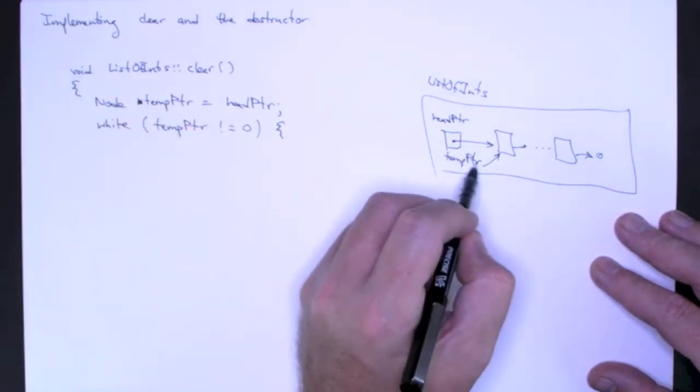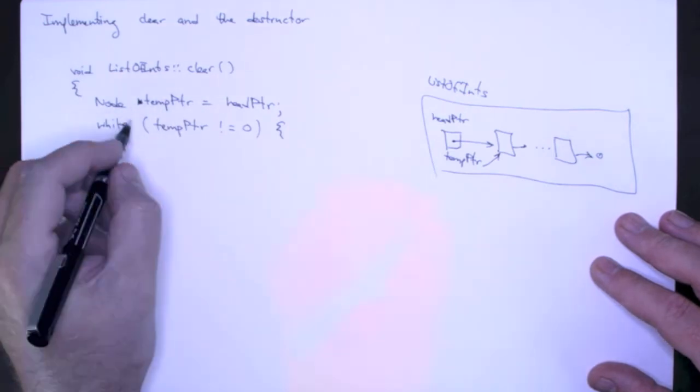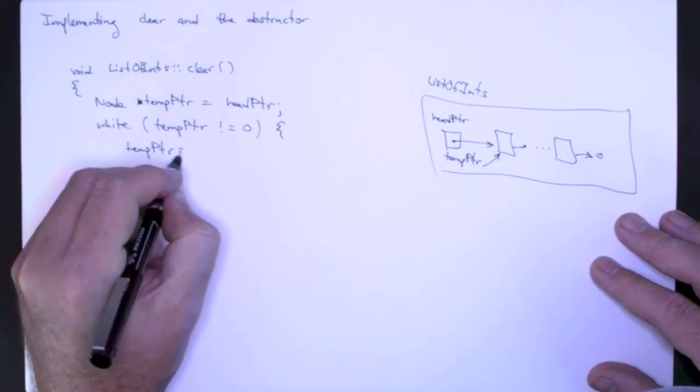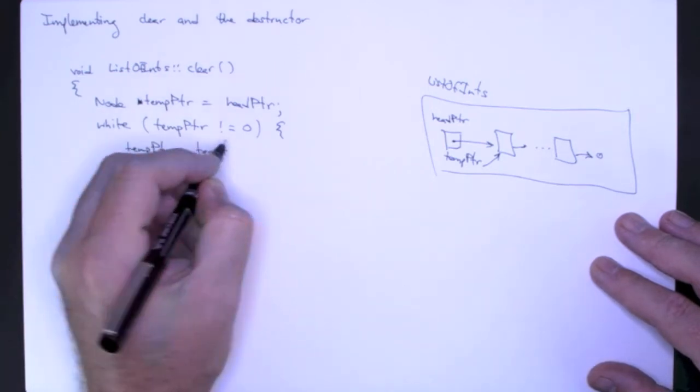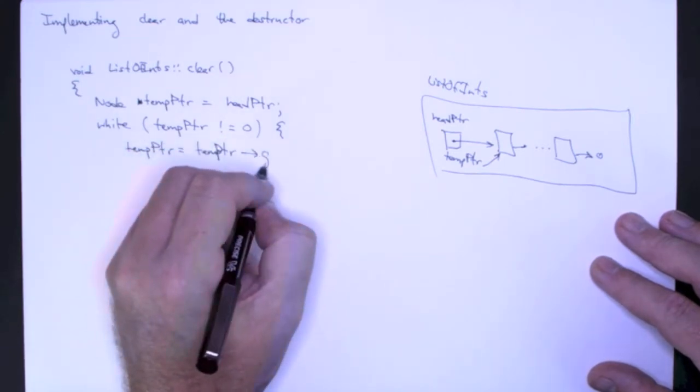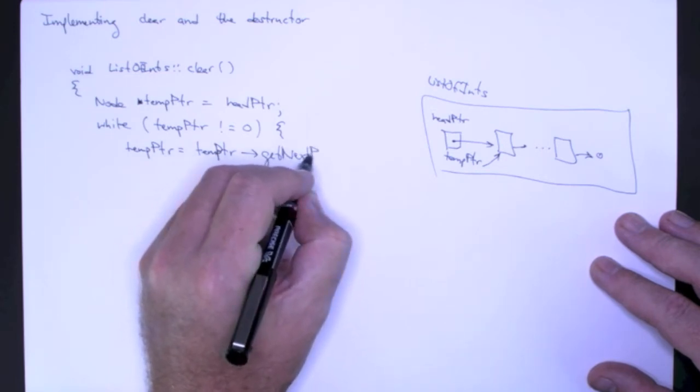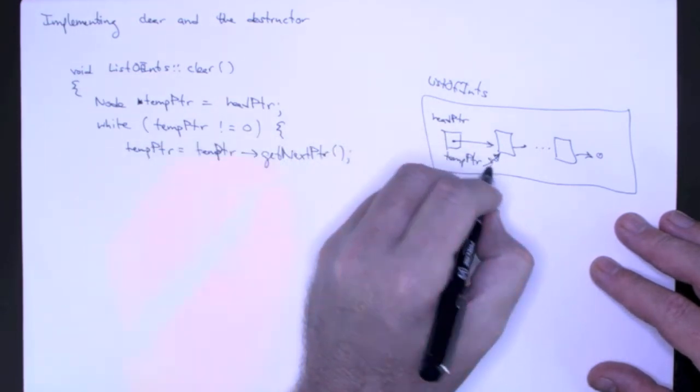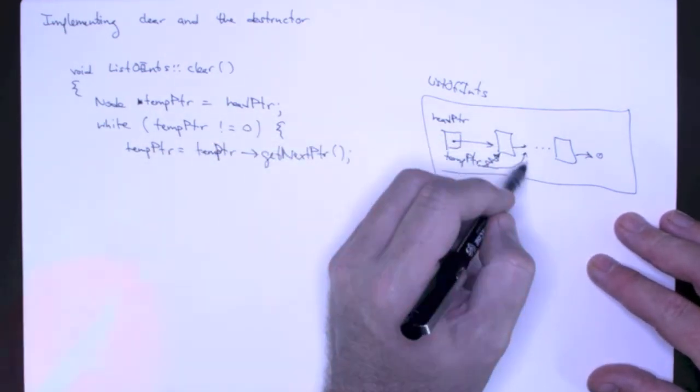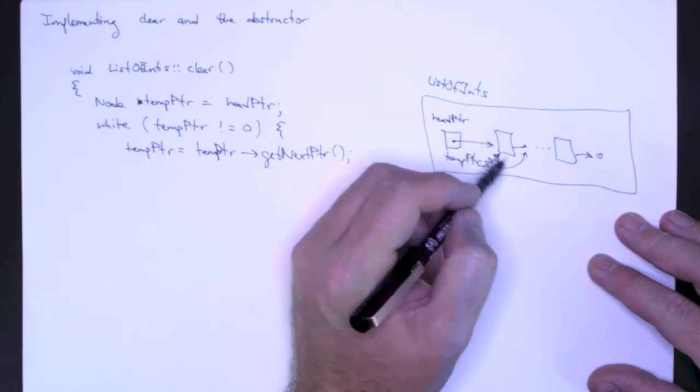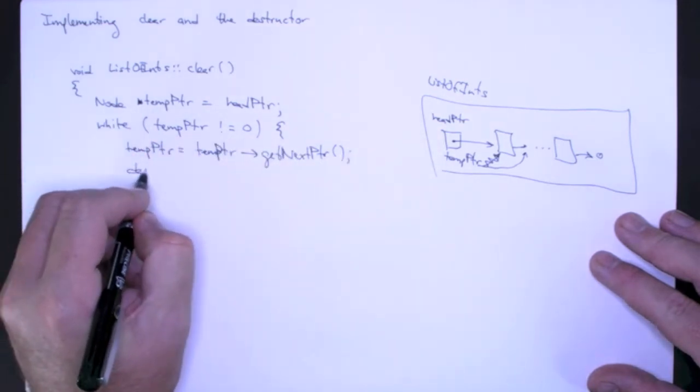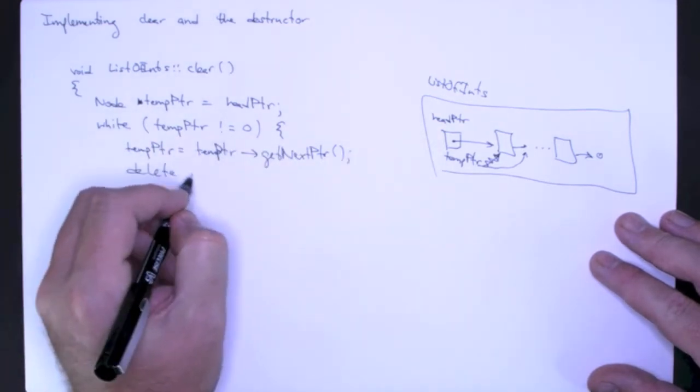I need to advance temp pointer to the next node in the list so that I can get access to the rest of the list. I do that by saying temp pointer is equal to temp pointer get next pointer. So that's going to advance temp pointer to the next node in the chain. Now that I've saved the rest of the list, I can delete the node that head pointer points to. I just say delete head pointer.